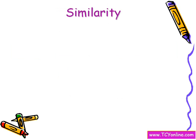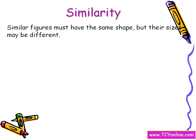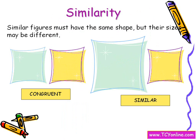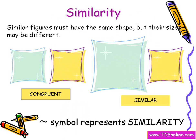Now let's understand what similarity is. Similar figures must have the same shape but their sizes may be different. For example, these two figures are said to be congruent because they have the same shape as well as the same size. While these two figures are said to be similar because they have the same shape but not the same size. And we use this symbol to represent similarity. So always remember, in similarity shape must be the same — size doesn't matter.